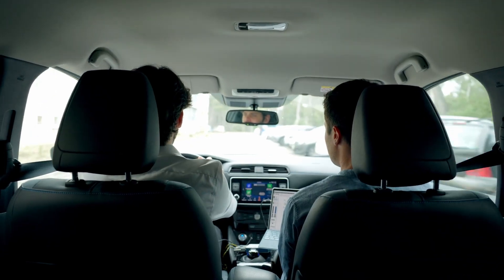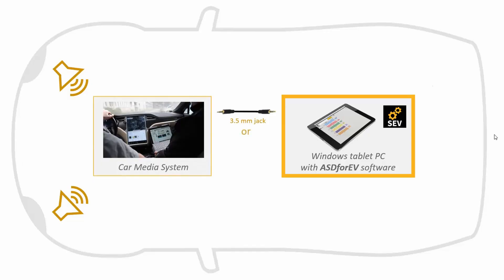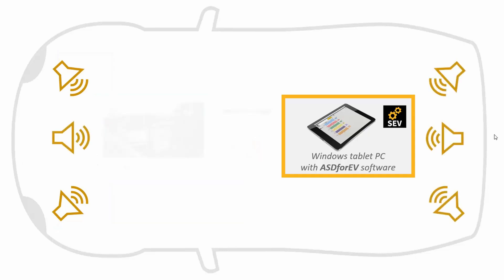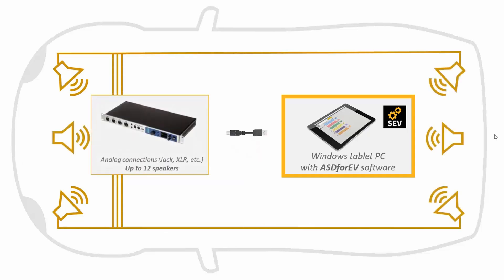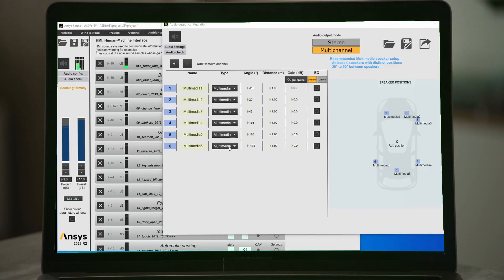It is also possible to use these parameter combinations in order to trigger sounds depending on a specific set of conditions. Sound is output directly on the vehicle speakers, either through a simple stereo cable or Bluetooth connection, or through an external multi-channel sound card connected directly to each speaker.